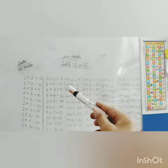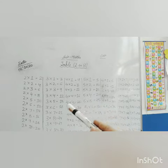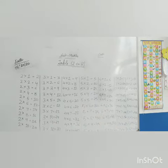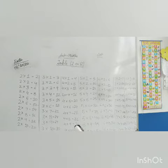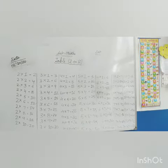4 ones are 4, 4 twos are 8, 4 threes are 12, 4 fours are 16, 4 fives are 20, 4 sixes are 24, 4 sevens are 28, 4 eights are 32, 4 nines are 36, 4 tens are 40. This way.